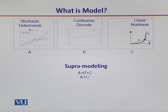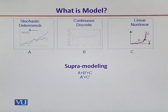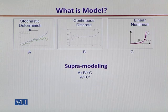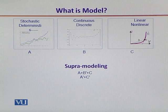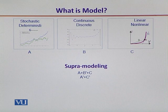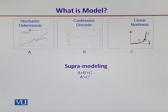If we denote them as A, B, and C respectively: A denotes the stochastic model, A complement denotes the deterministic model. Likewise, B denotes the continuous model, B complement denotes the discrete model. C denotes the linear model, and C complement denotes the non-linear model. If we combine variants of these models, for example A plus B complement plus C represents a model which is stochastic in nature, takes discrete values, and is linear. Another supra-model, A complement plus C complement, means it is a deterministic model that has non-linear behavior.